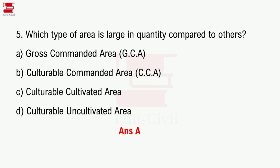Which type of area is large in quantity compared to others? The Gross Command Area is the largest. The Culturable Command Area (CCA) includes culturable cultivated and uncultivated area. The Culturable Command Area is the correct answer.